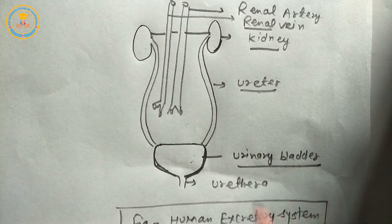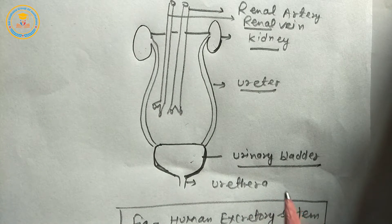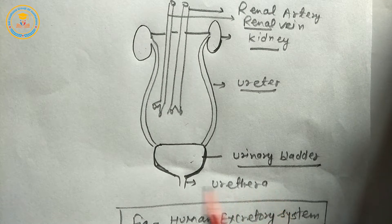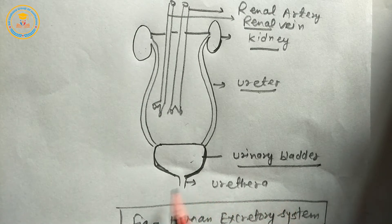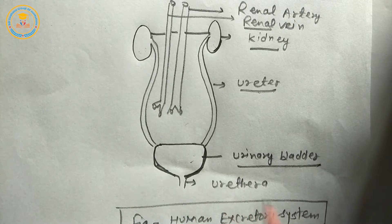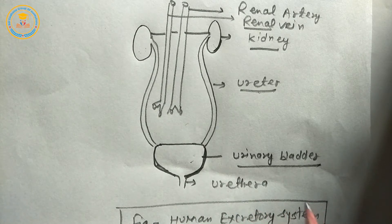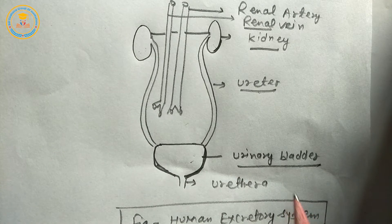Urethra is a tube-like structure and an accessory excretory organ. It opens to the outside of the body. The function of the urethra is to release urine from the human body to the outside.